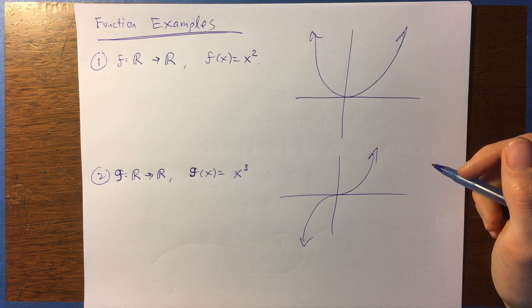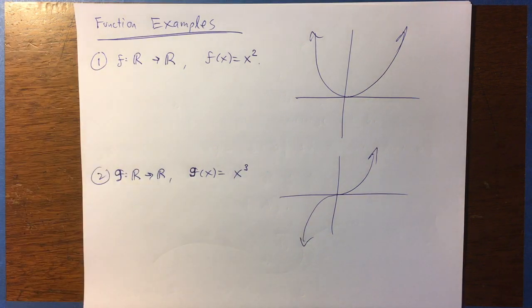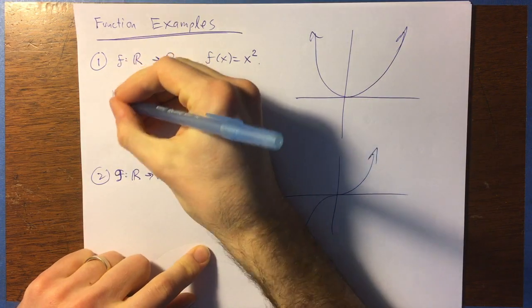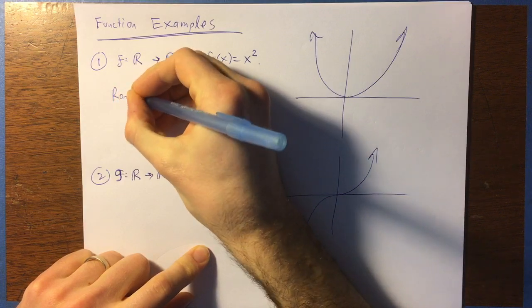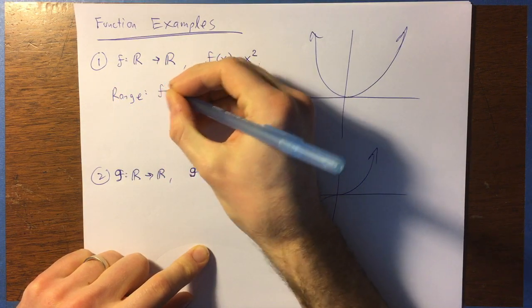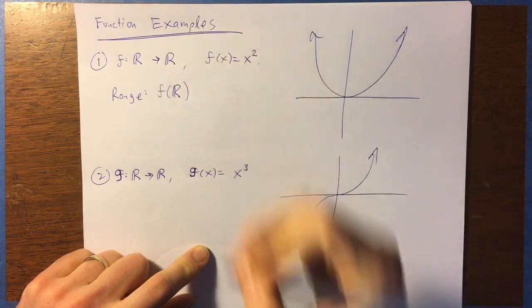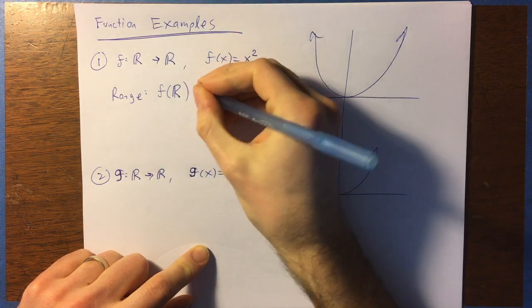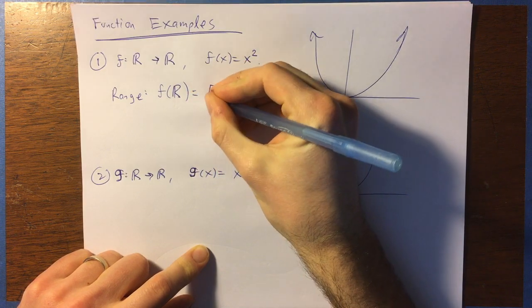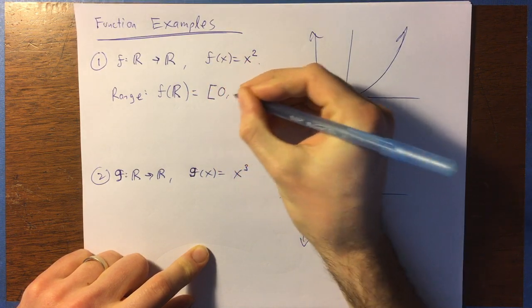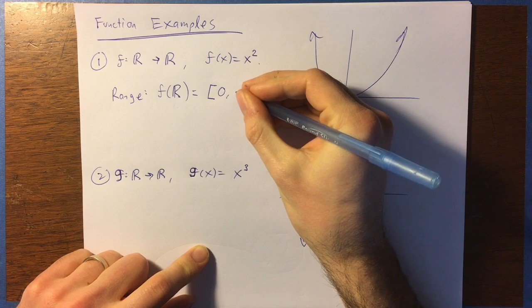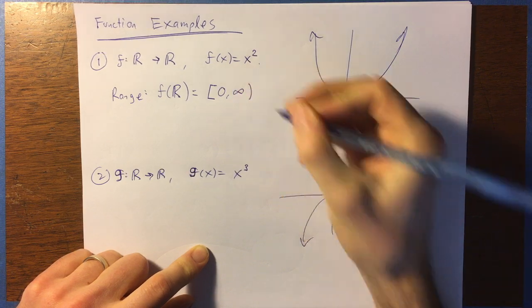Now, the point of these two examples here is that this, for the first one here, x squared, the range of this, which would be like what you get if you stick all real numbers into the function and take their outputs, the result of that is not the entire codomain. It's just the half of the real numbers from zero to infinity, like that.